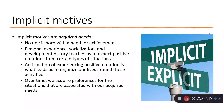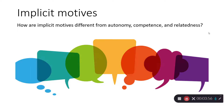This is very different from underlying psychological needs. How are implicit motives different from autonomy, competence, and relatedness? Basic psychological needs are universal — everybody wants to feel autonomous, competent, and related. Implicit motives, on the other hand, are learned. You may be high in need for achievement while I am not, based on our own personal histories and experiences.